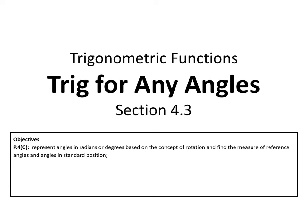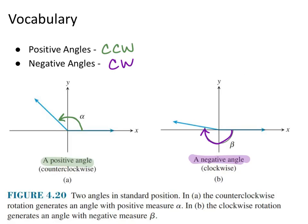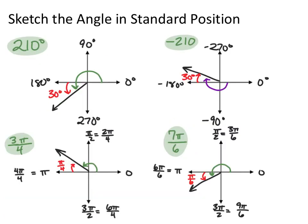Section 4.3 is kind of a doozy so just stick it out. We're finding trig for any angles. A couple pieces of vocabulary: when we have positive angles we're going in the counterclockwise direction, which makes sense from last time. Counterclockwise is positive, and if we're measuring a negative angle, that's clockwise — the opposite direction.